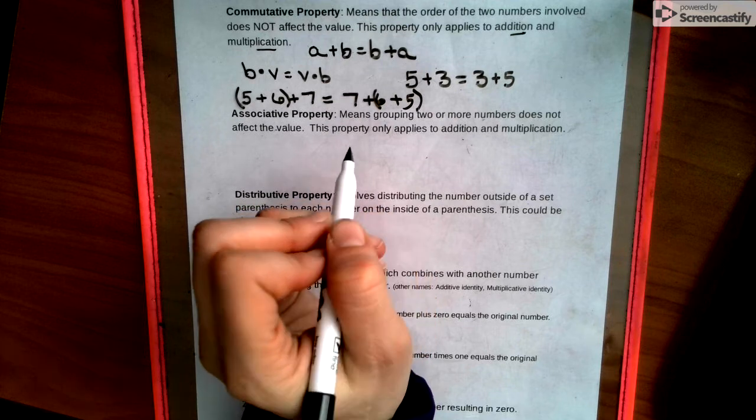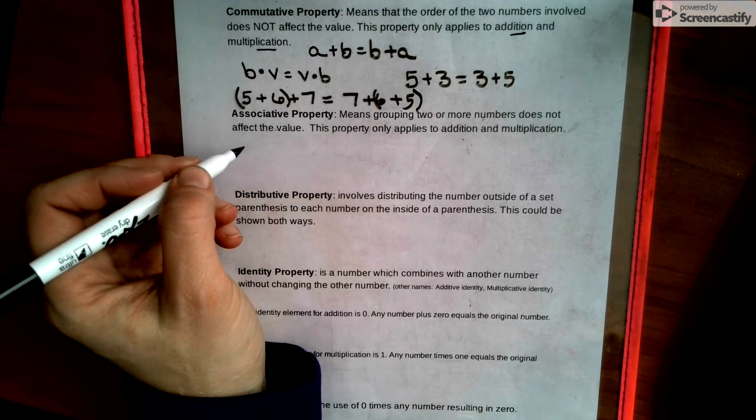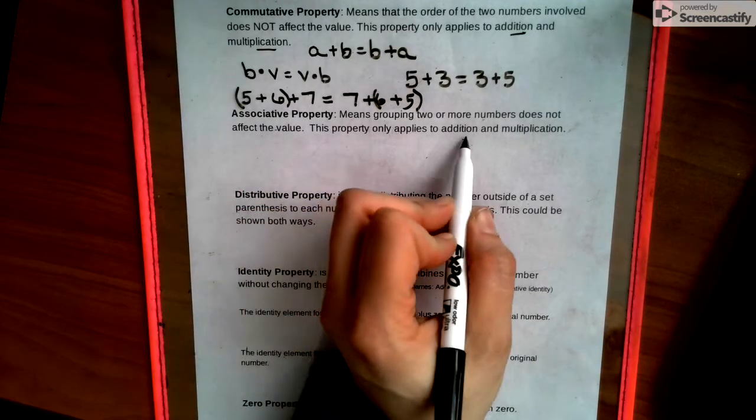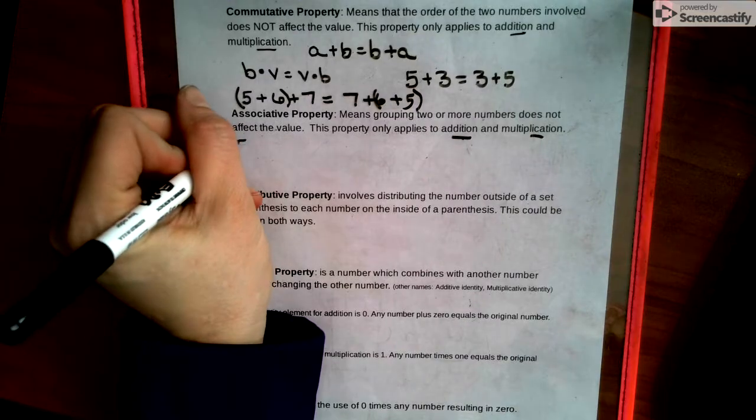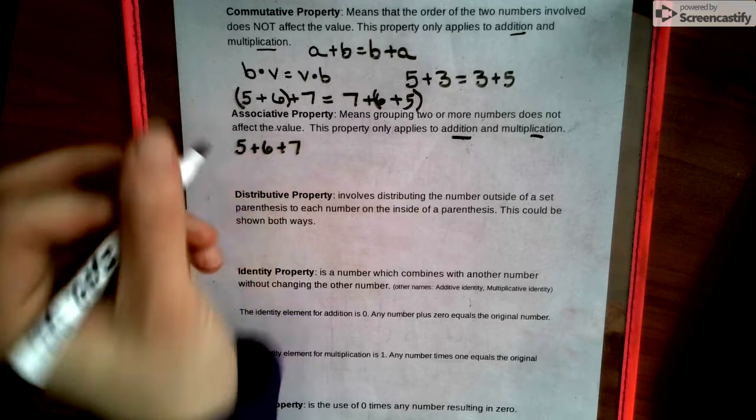Which is associative property. So associative property means grouping two or more numbers does not affect the value. Now it only applies again to addition and multiplication. So this is what associative property would look like.